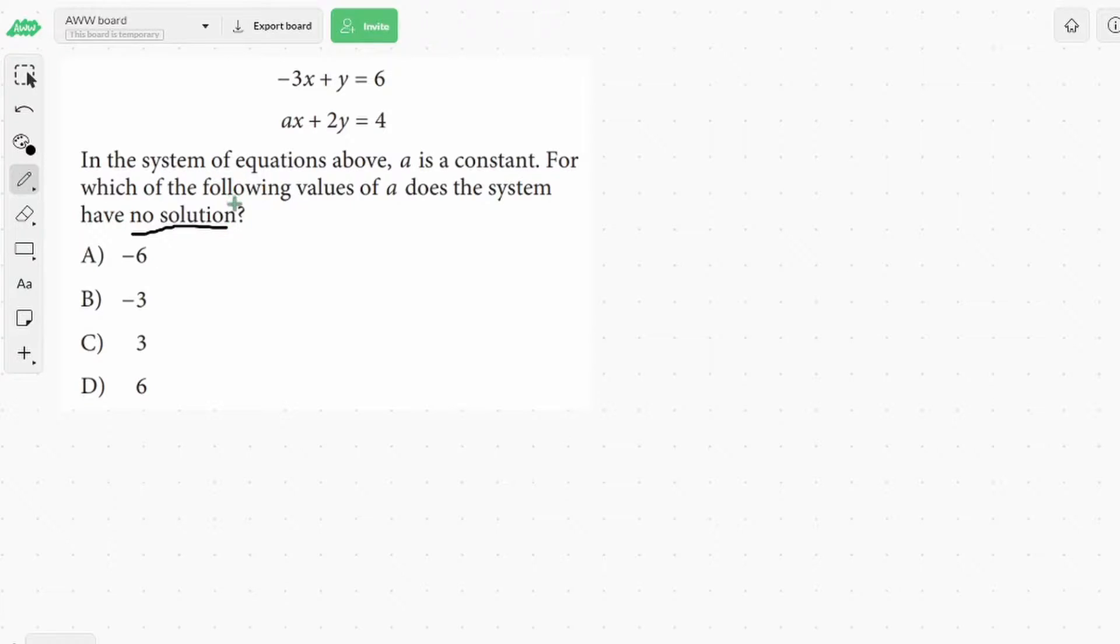So the rule for systems of equations with no solutions is that both x and y will cancel. So x and y cancel, and what you're left with isn't true. That means you'll be left with something like 2 equals 5 or 3 equals 9, something that we just know isn't true. So let's get into this problem.